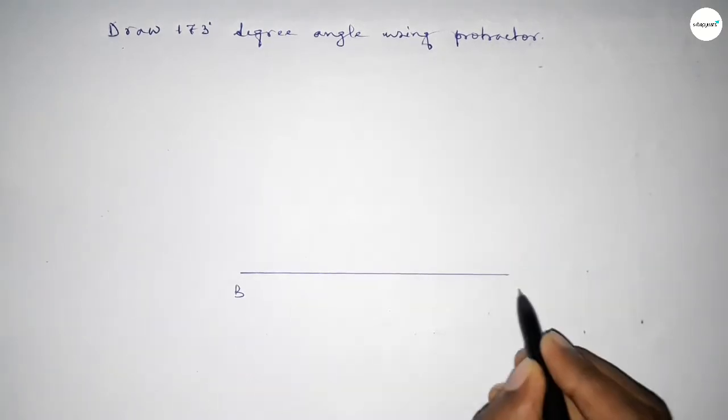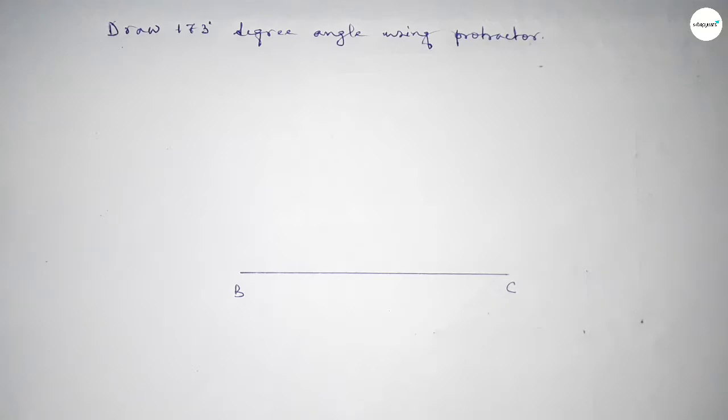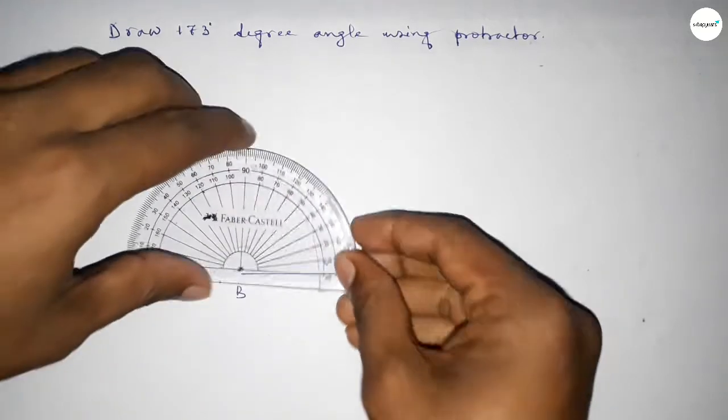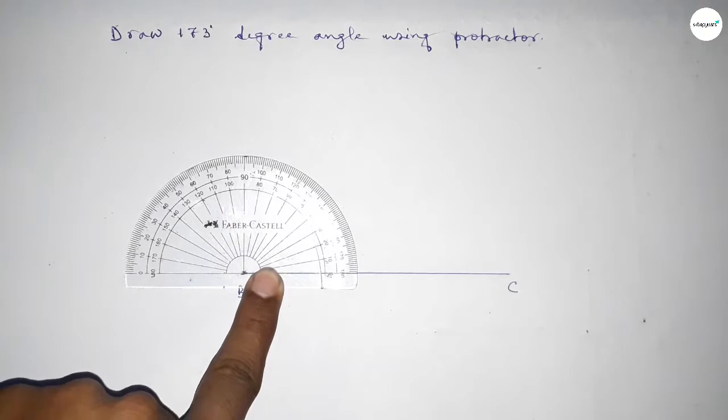Next, taking here point B and here C. Now putting the protractor on the point B perfectly, then counting the angles.